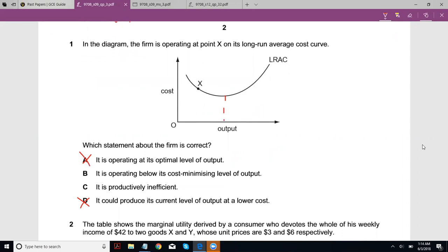D, it could produce its current level of output at a lower cost. Again, not really because this is the lowest possible cost. That's what the LRAC curve shows, right? You can't produce output at this particular cost. You can produce it at this point. You can't produce something at point A where you have the same output but at a higher cost.